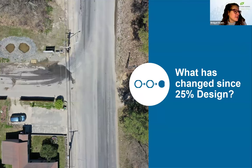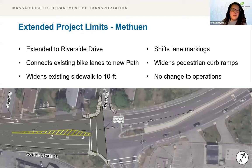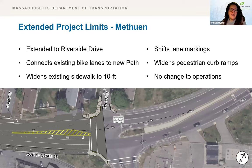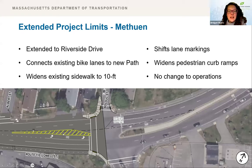Since the last public meeting, project limits were extended. This is a plan of the eastern project limits in Methuen — the project was extended to the Riverside Drive intersection with minimal changes. The sidewalk on the south side, west of Riverside Drive, will be widened to 10 feet, connecting to the at-grade path along the remainder of the corridor. To accommodate this wider sidewalk, the striping will be shifted north and the painted median narrowed. The sidewalk at Bullduck Street will also be widened so cyclists from the east can use crosswalks to reach the path.